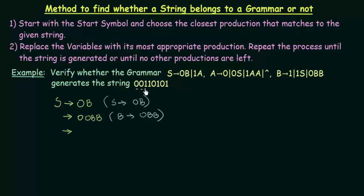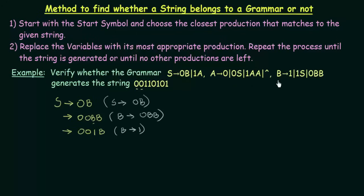Now we have already got the second 0. Now I need to get a 1, and the variables I have are B and B. In order to get 1, I look at B's productions. B gives 1 here, so I will replace this first B with 1, and leave the second B as it is. This is using the production B gives 1.